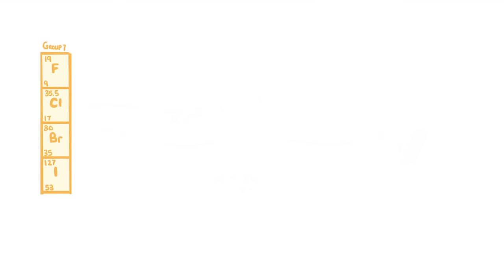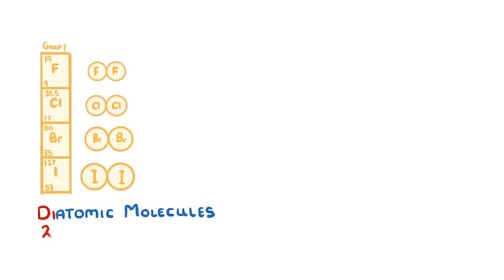All of the halogens can exist as pairs of atoms that we call diatomic molecules, which just means two atom molecules. They do this by sharing electrons and forming a covalent bond, as we've shown here for chlorine. Although this outer shell arrangement would be the same for any of the halogens.